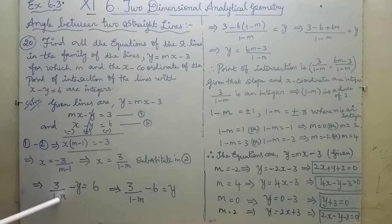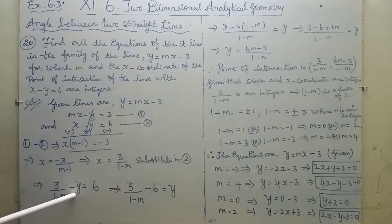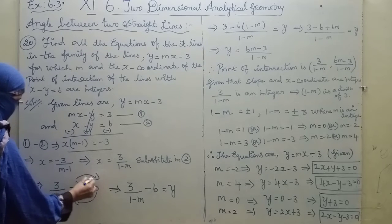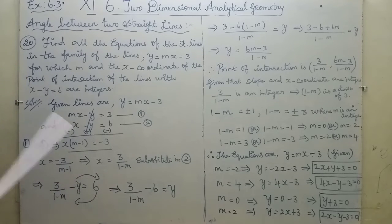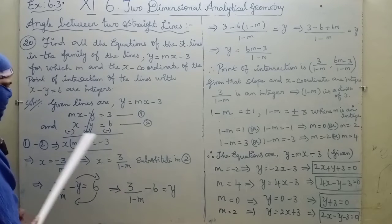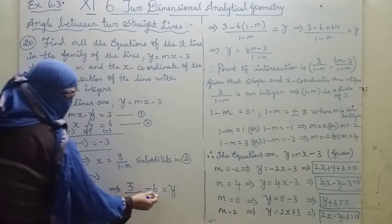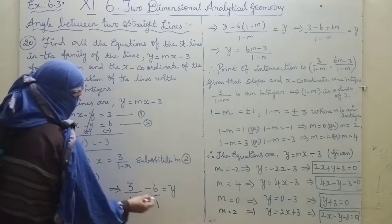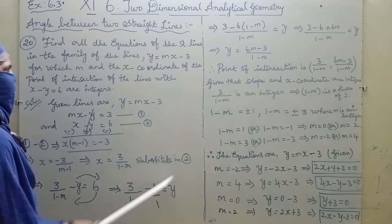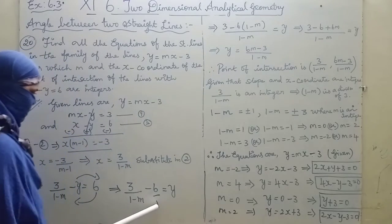We have 3/(1 - m) as it is, plus 6 inside gives minus 6. So 3/(1 - m) minus 6 equals y. Taking LCM as (1 - m).